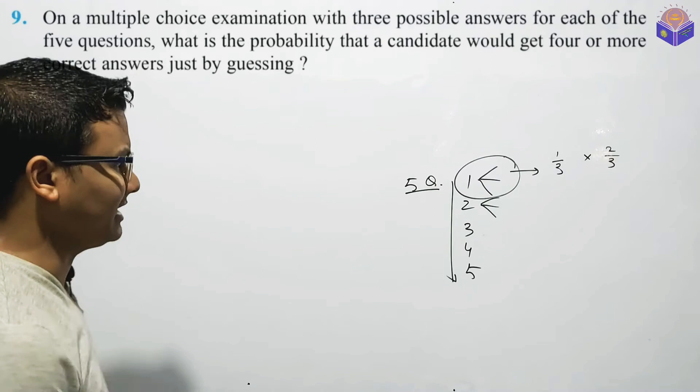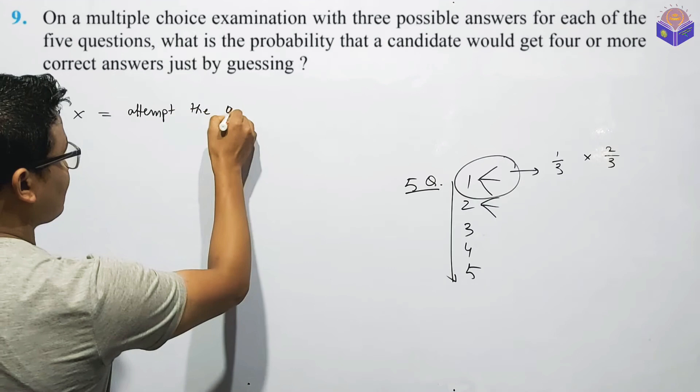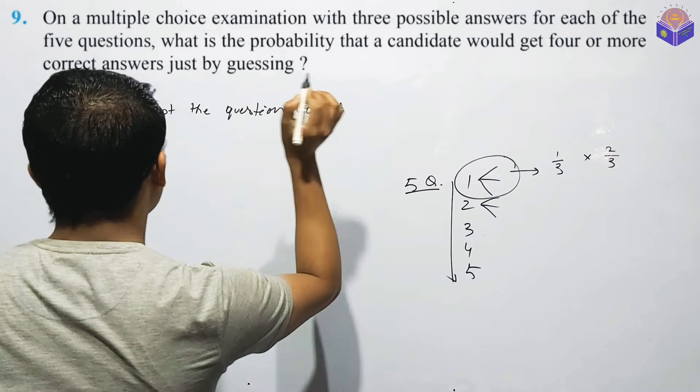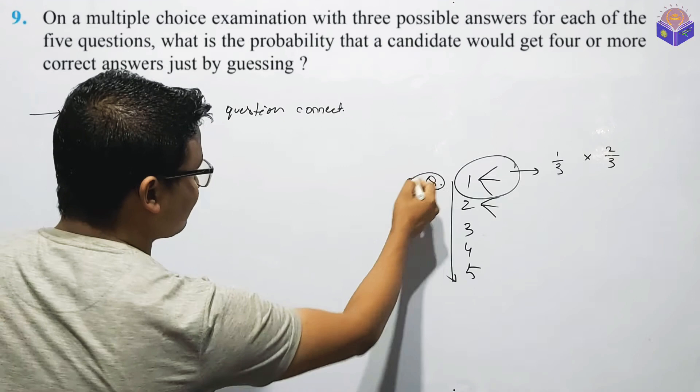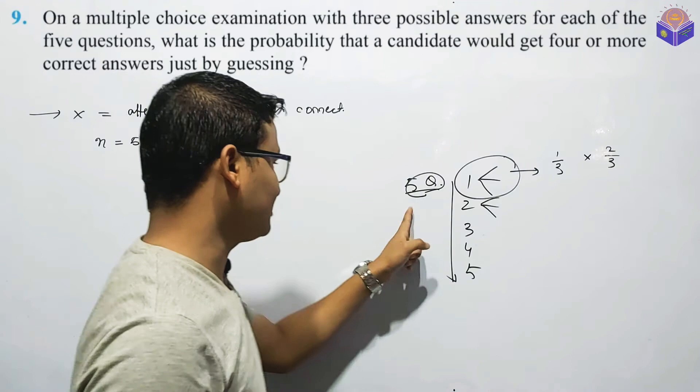Section number of success: if you have a success, you will get the answer. If you have a question, you will get the answer to the question. Attempt the question correctly. What are the number of trials?